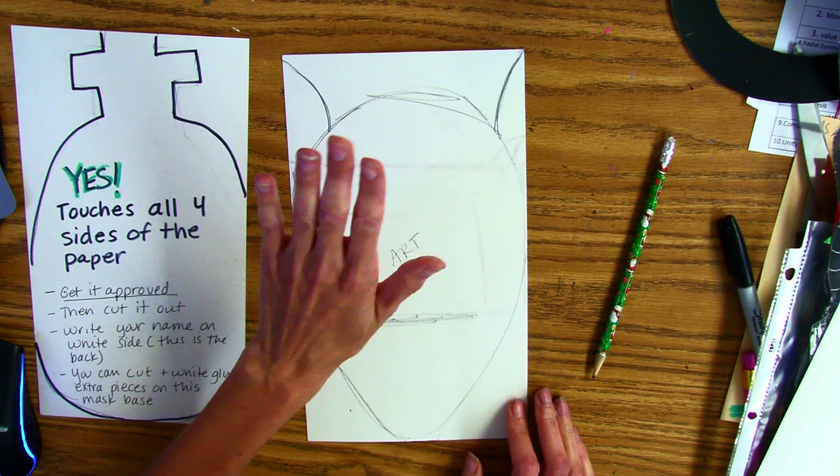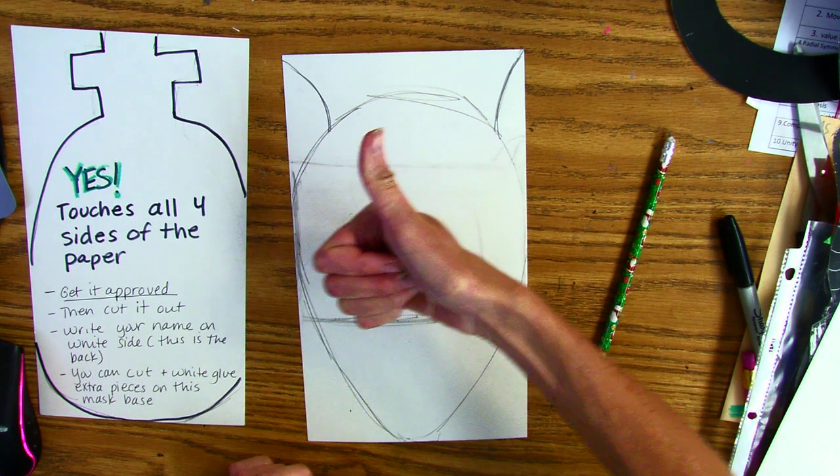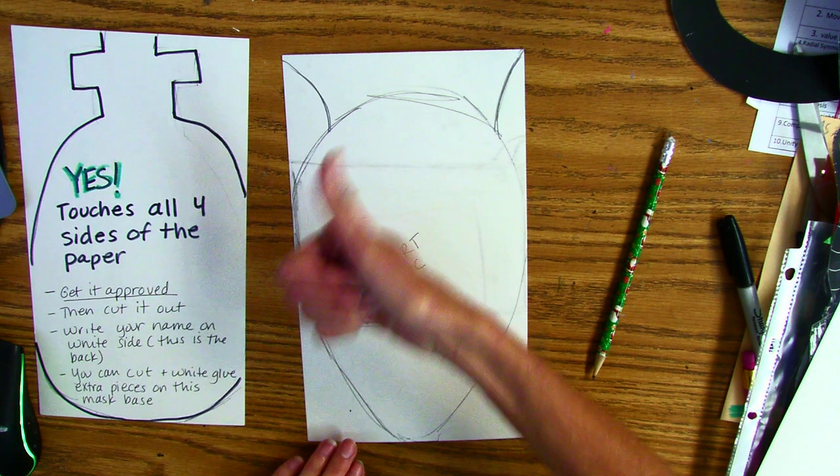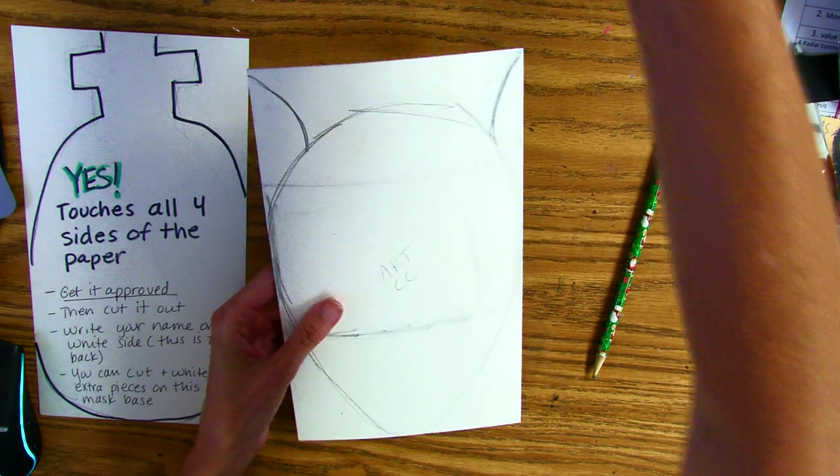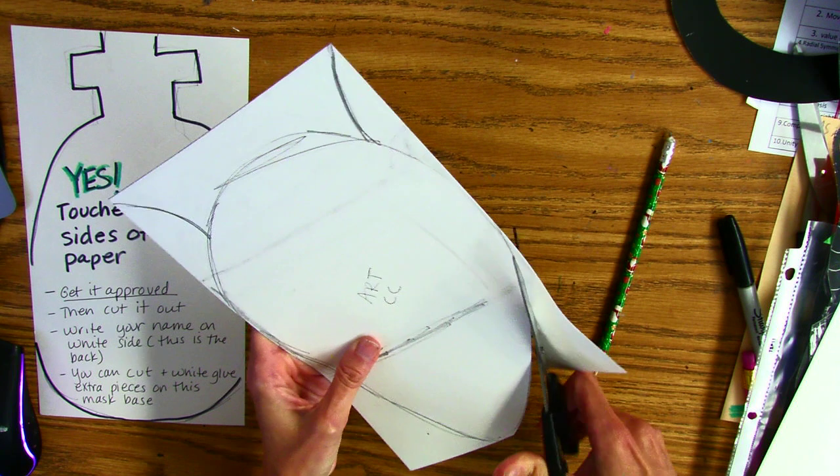Then I'm going to raise my hand. It's going to get a thumbs up or a thumbs down. If it gets a thumbs up from me, that means you're ready to cut. So again, be very careful not to scratch the black side.